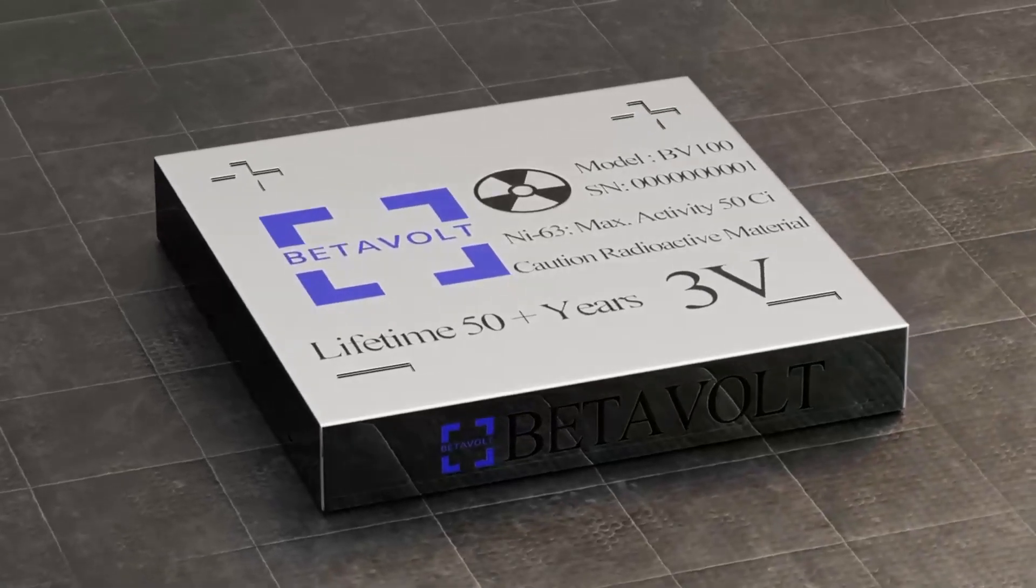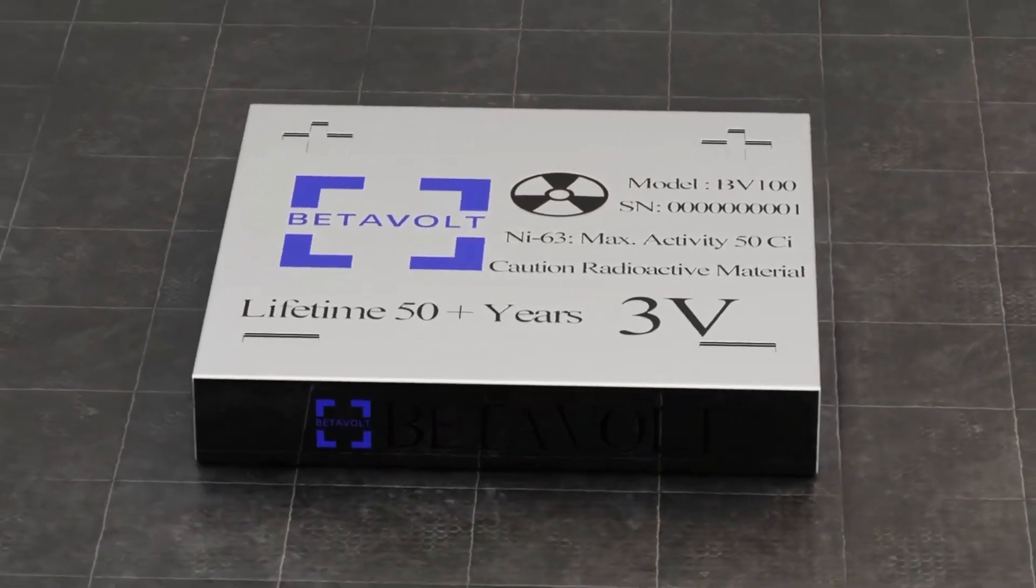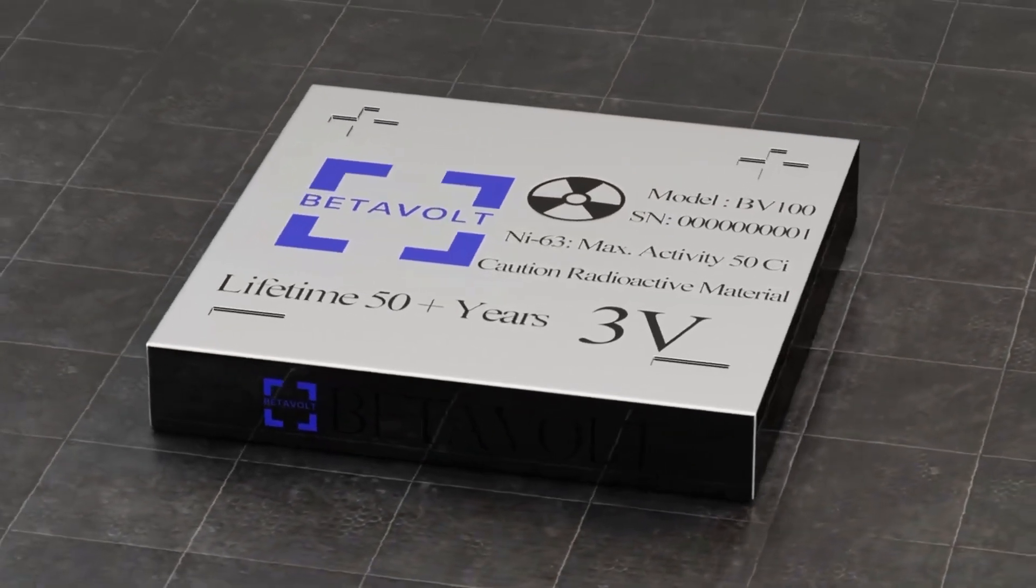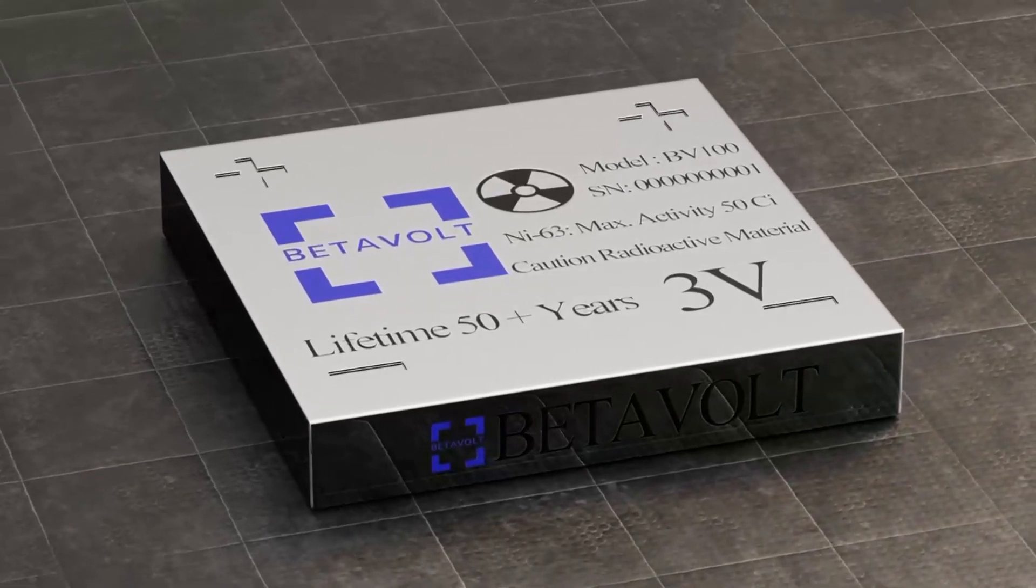The Chinese company Betavolt New Energy Technology has unveiled a prototype of a compact atomic battery of a size of 15 millimeters. It is claimed that the device can generate a continuous voltage of 3 volts for 50 years without interruption.